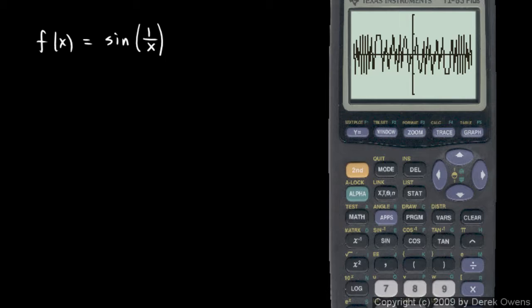As x gets huge, then 1 over x is getting really small. The reverse is also true: if x is getting really small, which is what we're doing here zooming in on the origin, then 1 over x is getting really huge. So imagine how many oscillations the sine function goes through as x gets big.